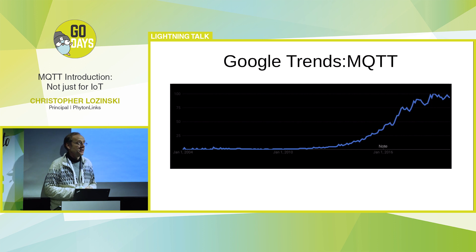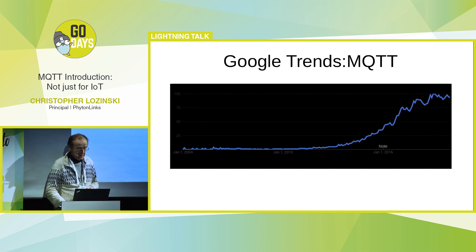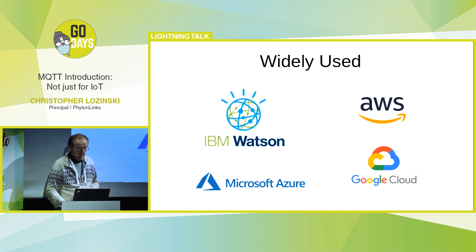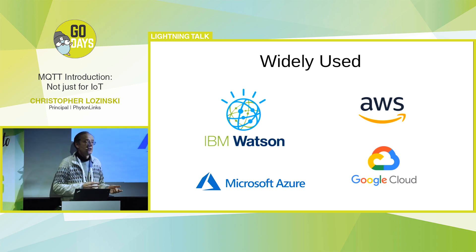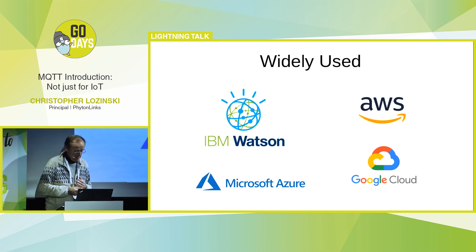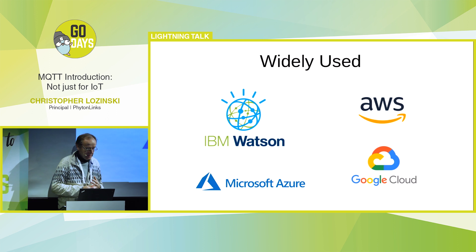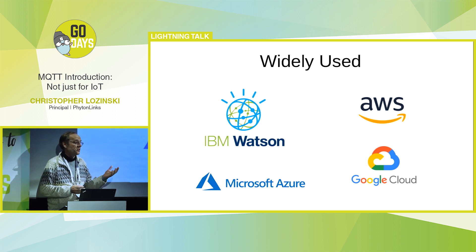Since around 2014 on Google Trends, MQTT has been taking off — maybe that's when the whole IoT thing started. It's very widely used. All the big names now include MQTT: AWS, Google Cloud, Microsoft Azure, IBM Watson.